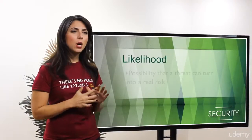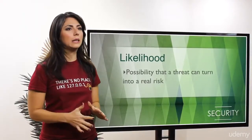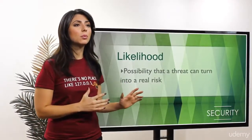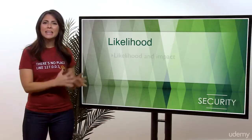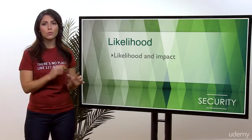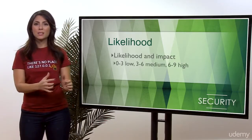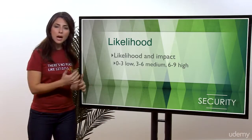Rank the risk from high to low, or high numbers to low numbers, and use qualitative and/or quantitative methods to further rank the risk, keeping in mind the likelihood of a risk occurrence. Identify countermeasures, which could be security controls already in place or new measures that should be taken. Document everything. Likelihood is the possibility that a threat or vulnerability can turn into a real risk and can be exploited. The impact of the risk is measured by the quantity of damage caused by the exploit. Likelihood and impact are measured with numbers from 0 to 9, where 0 to 3 is low, 3 to 6 is medium, and 6 to 9 is high.